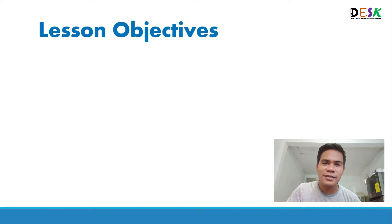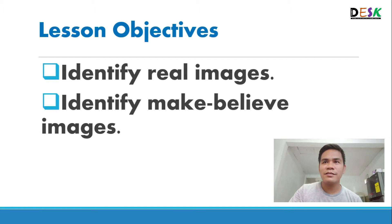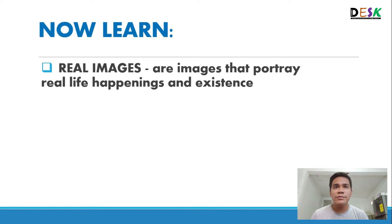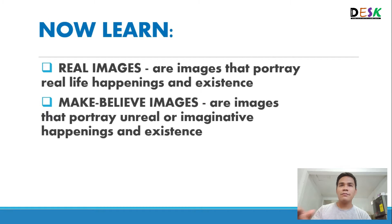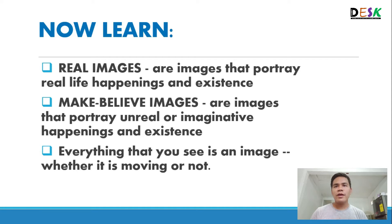By the end of this lesson, you should be able to identify images that are real and images that are make-believe or unreal. Real images are images that portray real life happenings and existence. Make-believe images are images that portray unreal or imaginative happenings and existence. Everything that you see is an image, whether it's moving or not.